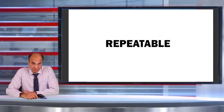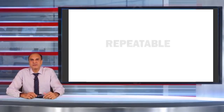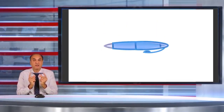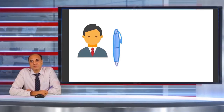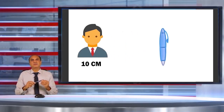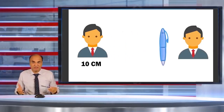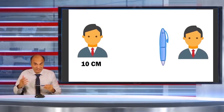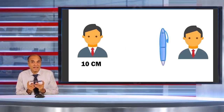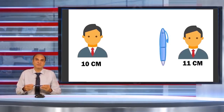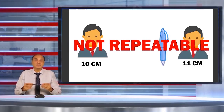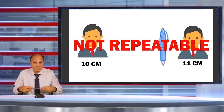A measurement system should also be repeatable. For example, I give this item to one person and ask for the length of this item, and the person says it's 10 centimeters. But if I give the same item to the same person under the same condition using the same measurement device, and this person measures the length as 11 centimeters, that means my measurement system is not repeatable — it is not able to repeat its own reading.